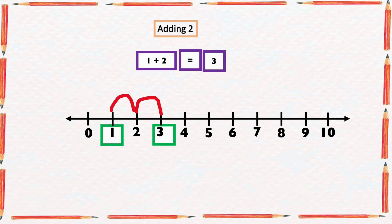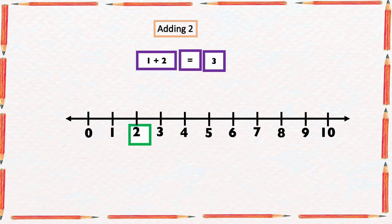We can also do it in a different way. Rather than counting 2 numbers forward from 1, we can start from 2 and count just 1 number forward: 1. And it will give us the same answer: 3.